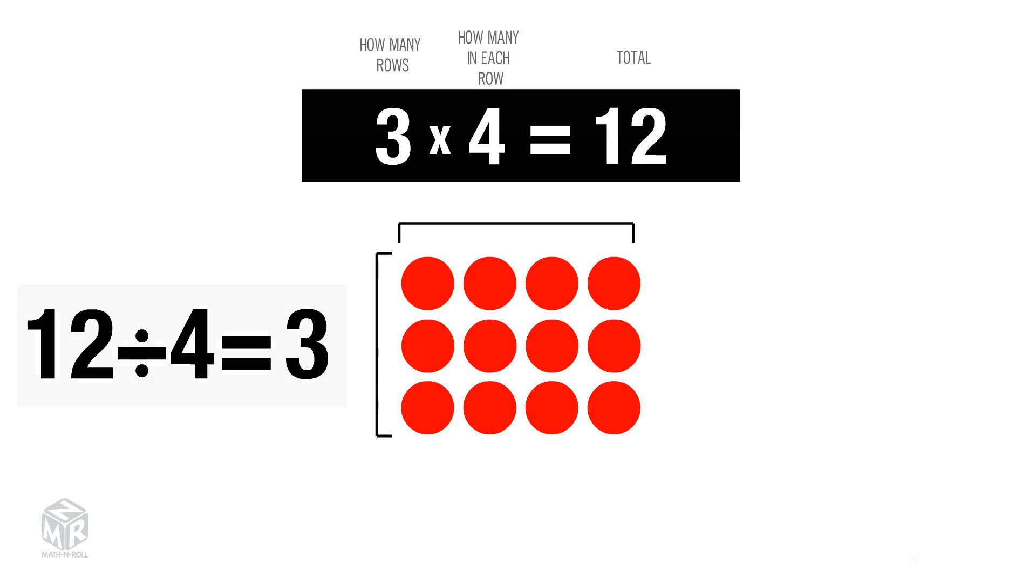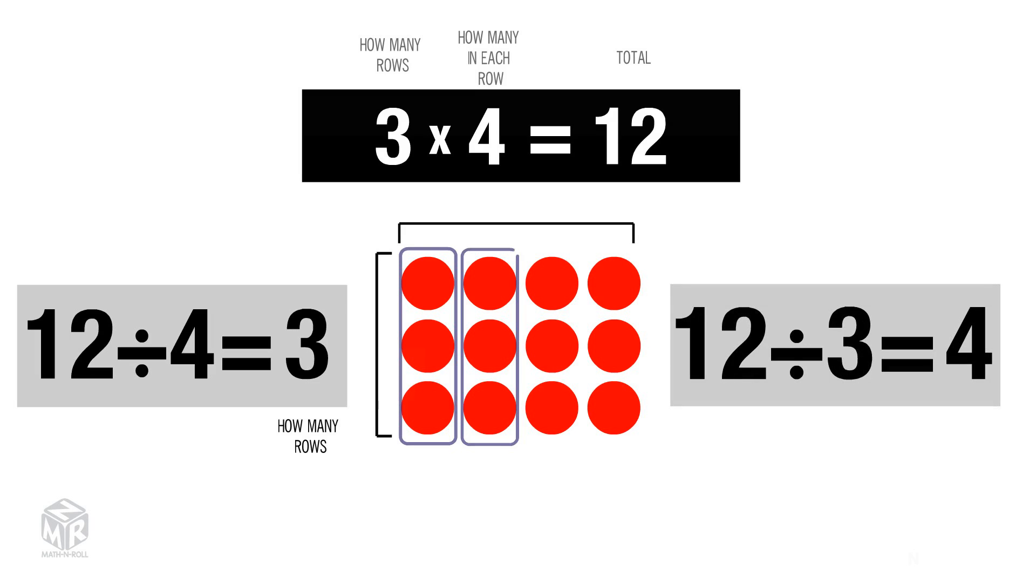12 divided by 4 is the opposite operation. We can use the same array to model and solve related division problems. An array can help us divide by showing how many rows or how many counters are in each row. If we divide 12 by 4, we find 3, which is how many rows we have. If we divide 12 by 3, we find 4, which is how many counters are in each row.